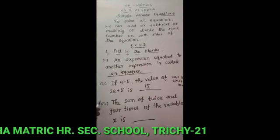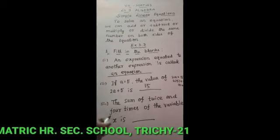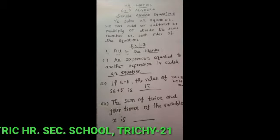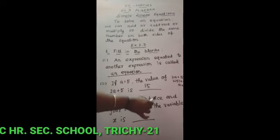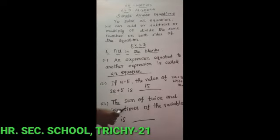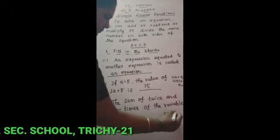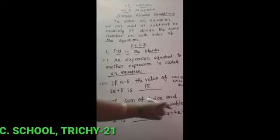In the third one: the sum of twice and 4 times of the variable x. Twice means 2 times of x and 4 times means 4 times of x. So 2x plus 4x — sum means addition — 2x plus 4x, we have 6x. This is the answer for the third one.